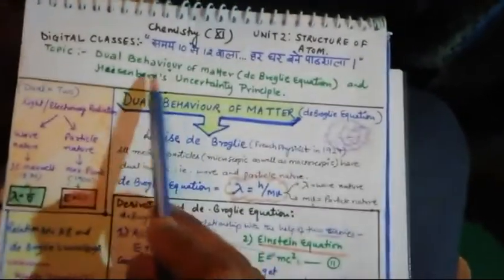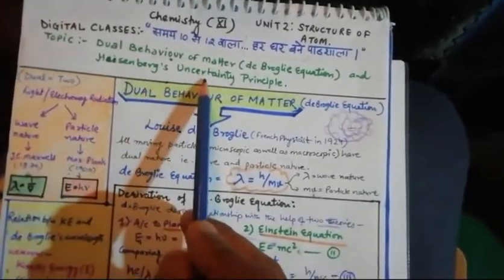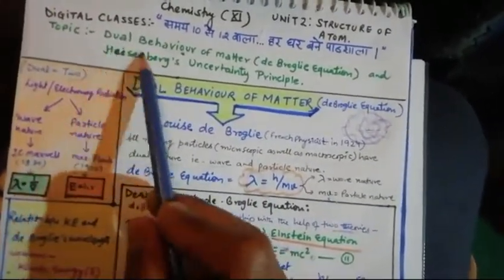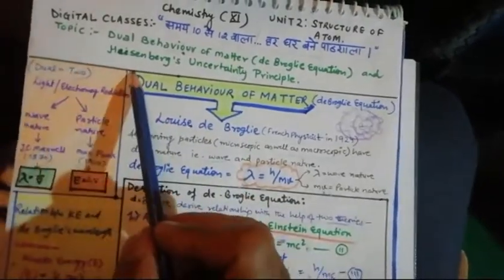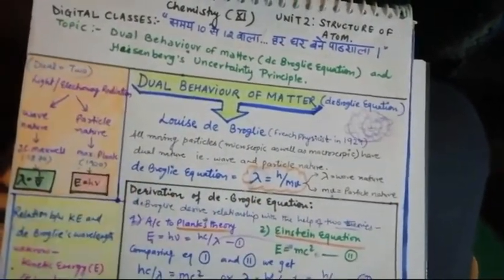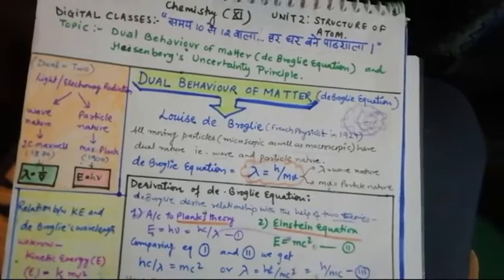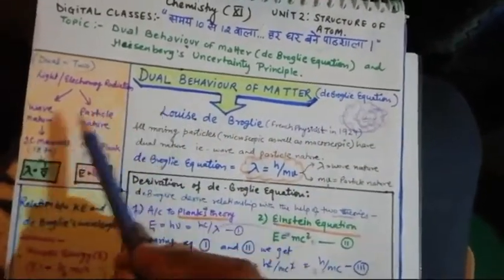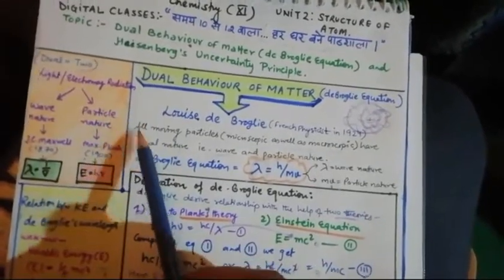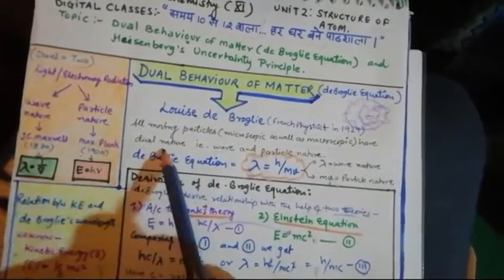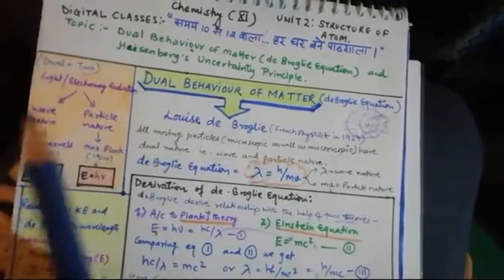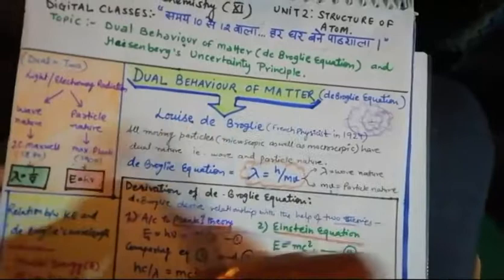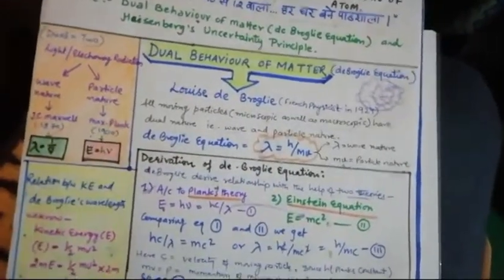This was the de Broglie equation. In the next video I will cover the next topic — the Heisenberg uncertainty principle. To recap: dual behavior of matter came from studying wave nature of matter and particle nature of matter. De Broglie clubbed both natures and said all moving particles have dual nature — they show wave nature as well as particle nature.